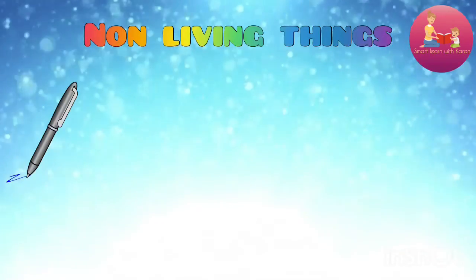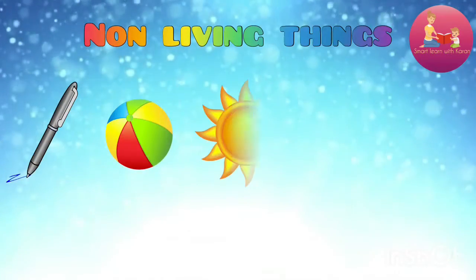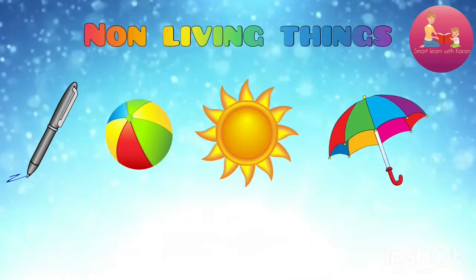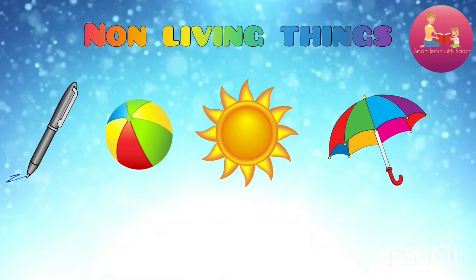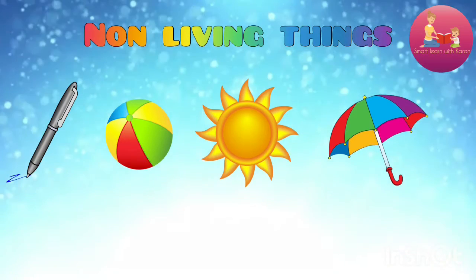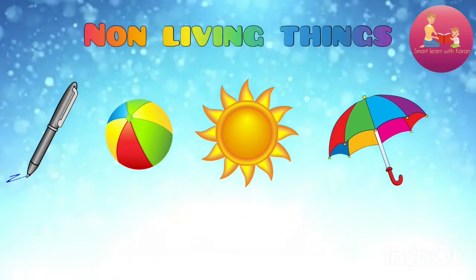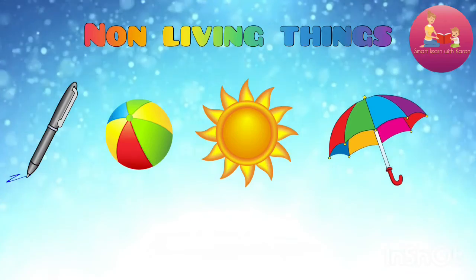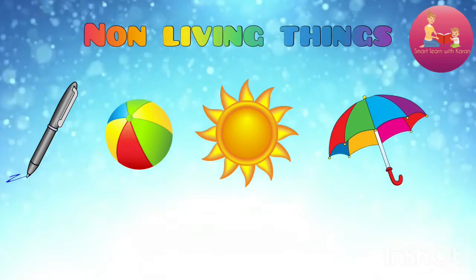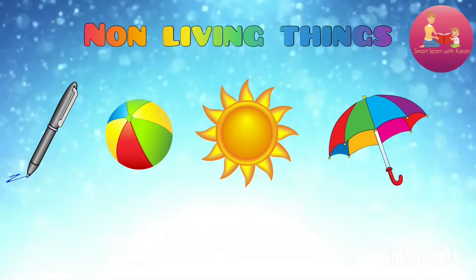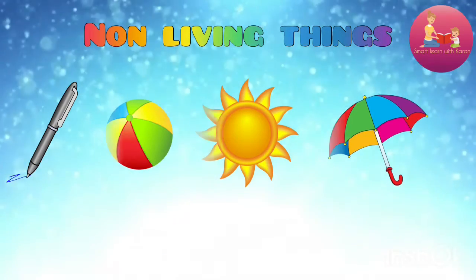Non-living things cannot reproduce. Pencil, ball, sun and umbrella are examples of non-living things.